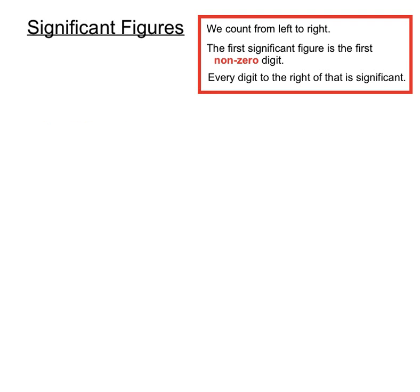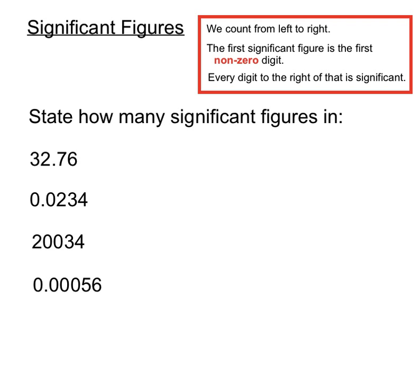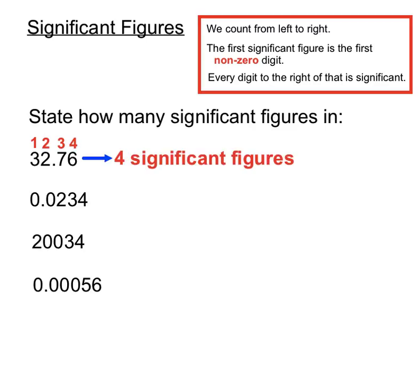Let's have a look at some examples. When we're counting and we're asked to see how many significant figures certain numbers have, we start counting from left to right, and we start counting when we hit the first non-zero digit. We don't have to go very far in this first number — that first digit is a non-zero digit. So we'll start counting our significant figures there: one, two, three, four digits that are significant. So we say that's a four significant figure expression.